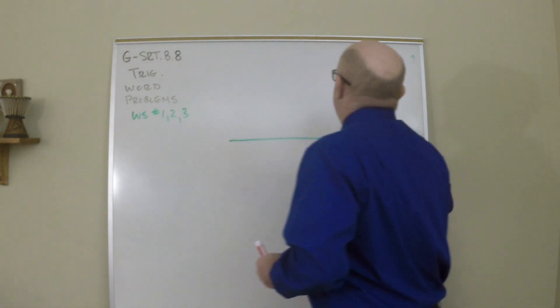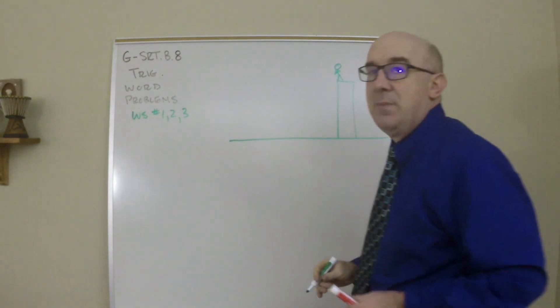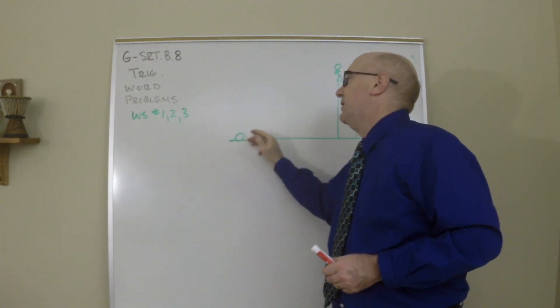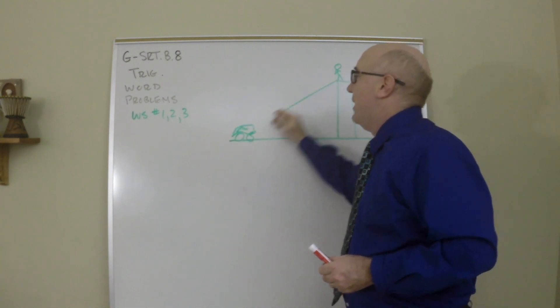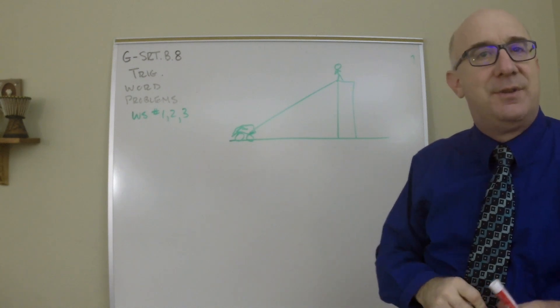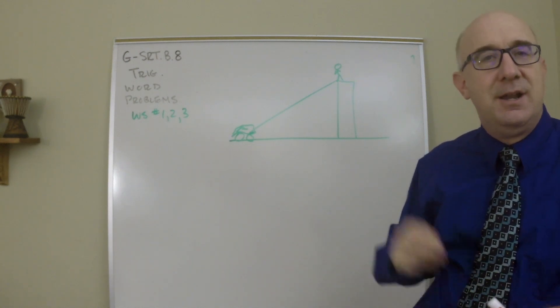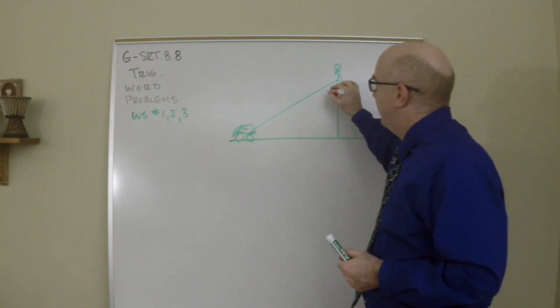You and I are up on some sort of very tall thing, like a building up here. And we look down at this nice little car that's driving by. And we look down at it. And I say to you, we look down at an angle of depression of 15 degrees. The natural instinct here is to drop 15 right here.